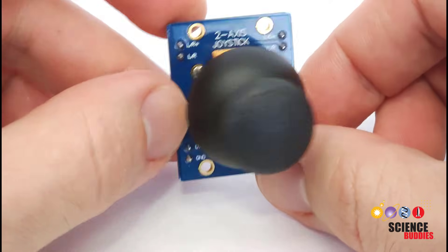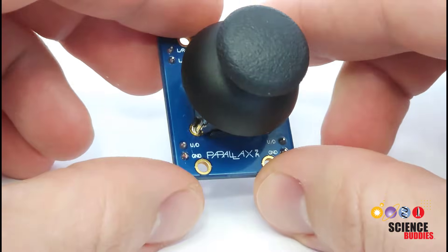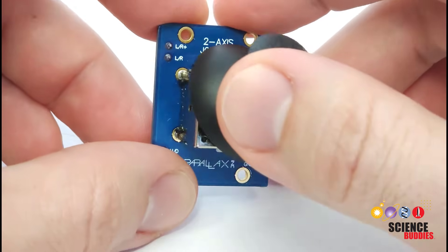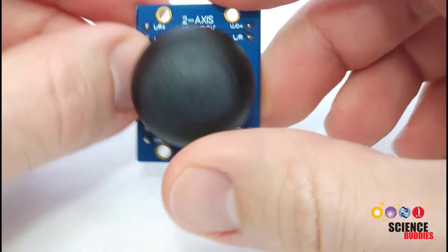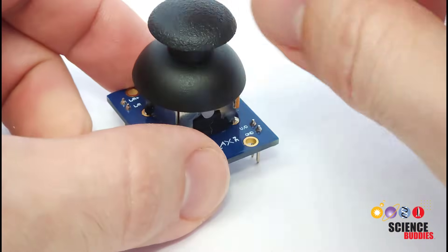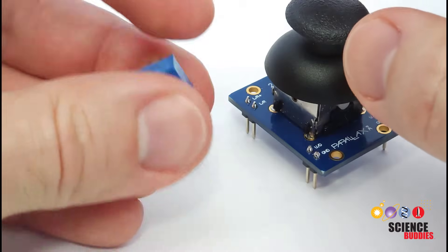While it might look kind of complicated and intimidating at first, this joystick is really just two potentiometers. So you see this is labeled two axis joystick that means it has two independent outputs. I can move the joystick up and down, left and right, but I can also roll it around and move it diagonally. But what's inside this housing here is just two potentiometers.